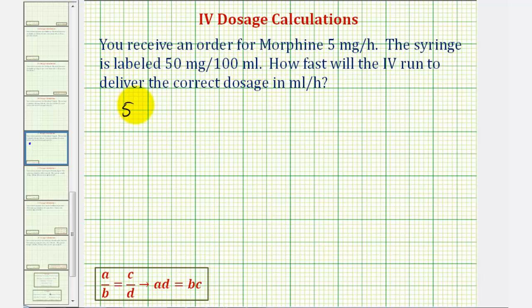So we have 50 milligrams is to 100 milliliters as the required dosage of 5 milligrams is to an unknown number of milliliters, we'll say X milliliters.